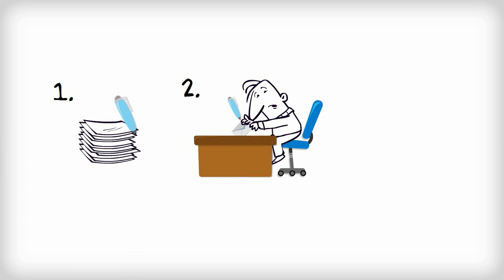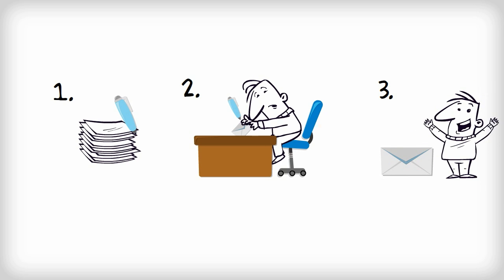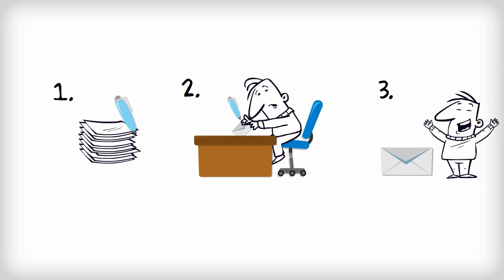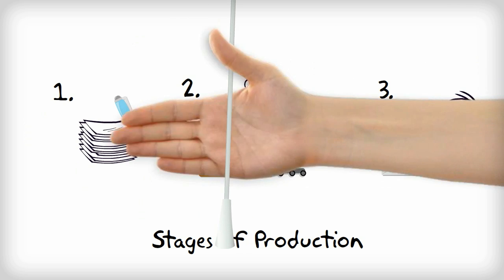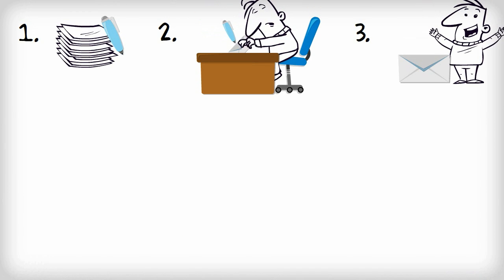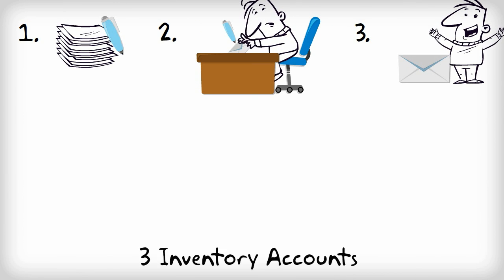They need to take the piece of paper, fold it in a certain way, and apply glue on certain parts of the paper. When the proper instructions are followed, we will end up with a finished product — an envelope that we are ready to sell. These three steps are the three stages of production in a manufacturing business.